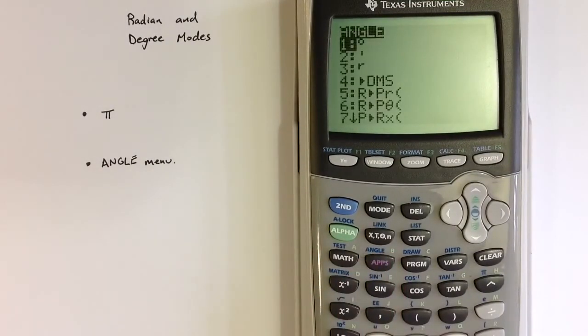In a similar way, if we're in degree mode and I want to identify something as radians, I can use option three. I hope you enjoyed the video. Thanks for watching.